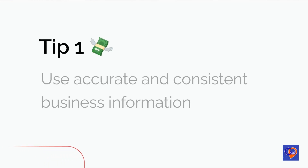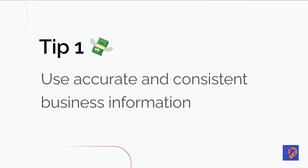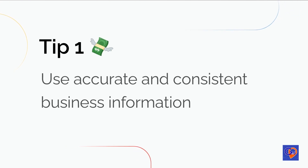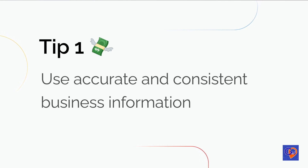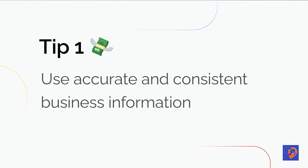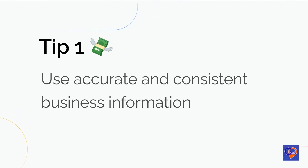Tip 1: Use accurate and consistent business information. Accurate and consistent business information is crucial for your Google My Business profile. Make sure that the information you provide on your profile matches the information on your website and other online directories. This includes your business name, address, phone number, hours of operation, and categories.